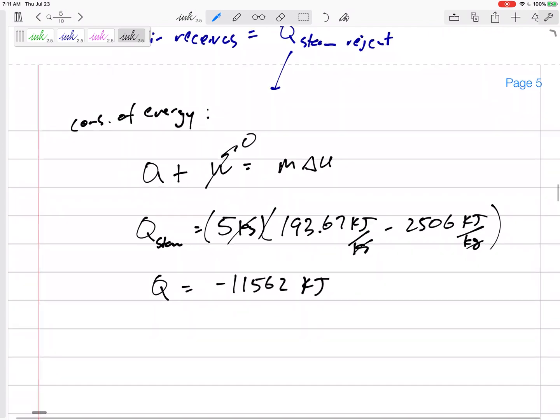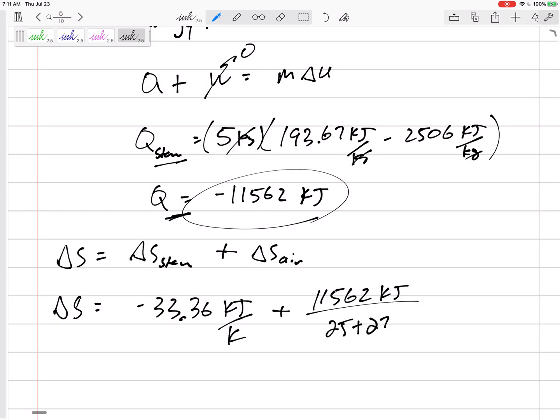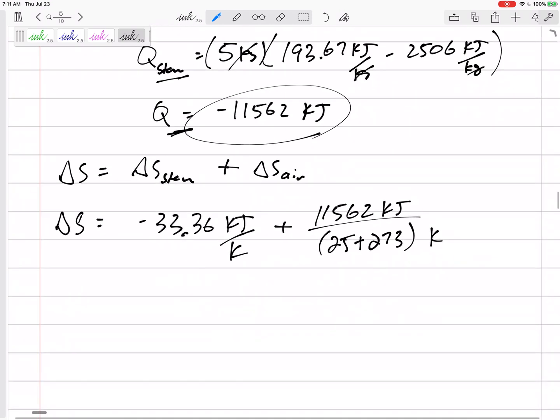But down here, delta S total: delta S steam, delta S of the air. Delta S steam I've already calculated: negative 33.36 kilojoules per K. Now the Q for the air - should I plug in negative or positive? Well, the steam loses it, negative 11,562. The air receives it: positive 11,562 kilojoules per 25 plus 273 kelvin. Units work out. Delta S positive 5.44 kilojoules per kelvin. Anytime you're looking at the whole system, the system and the surroundings, the entropy should increase - rise in entropy principle.